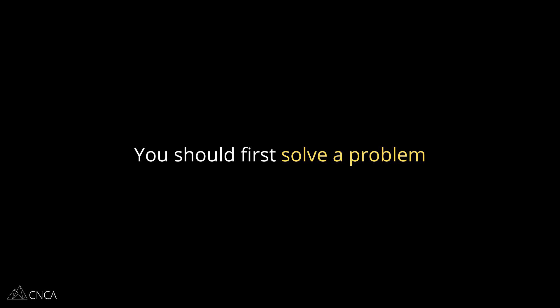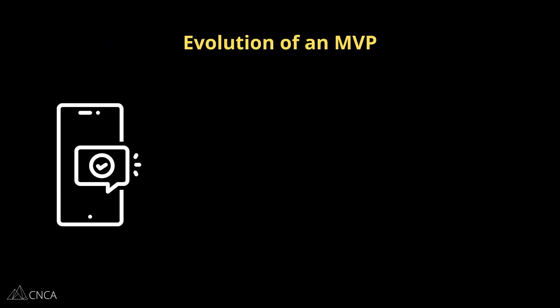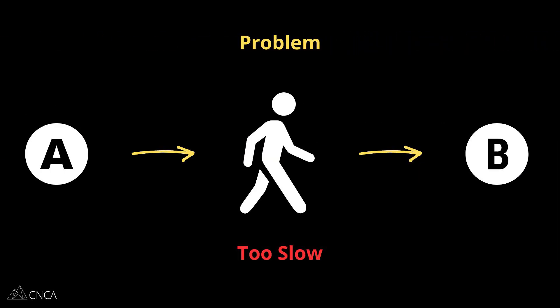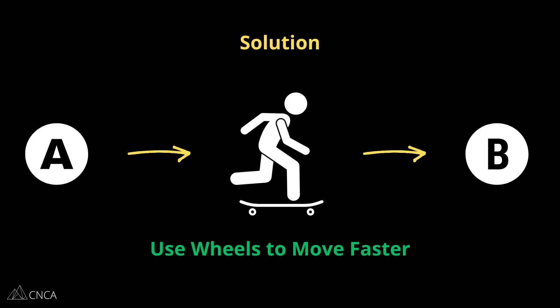Don't worry about how things look or even about converting your entire market quite yet. There's a classic example for visualizing the evolution of an MVP by comparing it to a simplified evolution of transportation. The problem is moving from A to B is too slow. The solution is to get on wheels to move faster. The MVP here for this solution is a skateboard — a board on wheels, though incredibly simple, is still solving our problem.